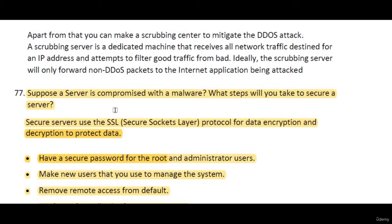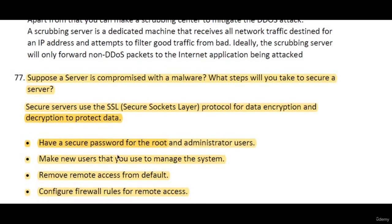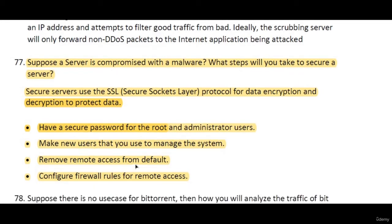After isolating the server, investigate whether there is something malicious. If malicious content is found, clear all those things and check other parts of the network — which machines were connected to this server — and clear those too. Once you know all that, secure the server again: make a secure password, create a new management user, remove default remote access, and configure firewall rules for remote access.